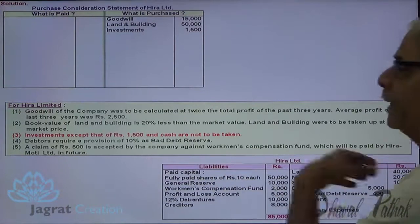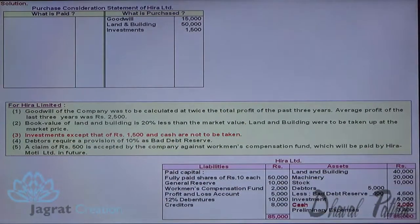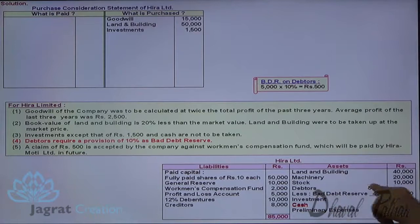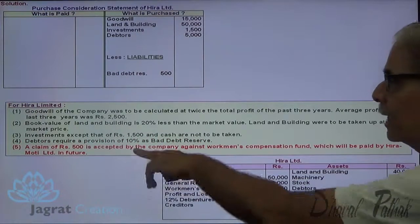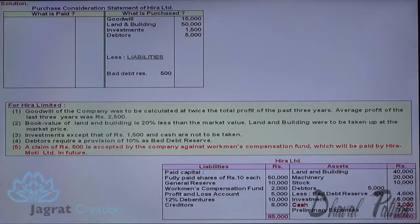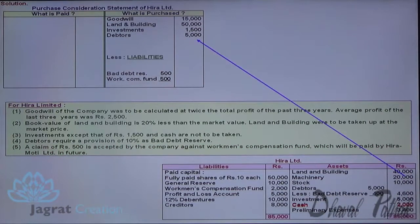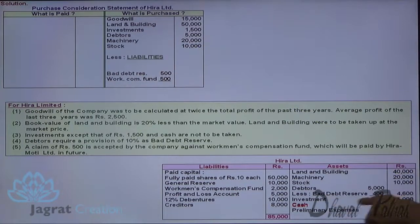Debtors require 10% provision for bad debt. Debtors are 5,000, so 10% provision is 500, meaning net debtors are 4,500. A claim of 500 is accepted against the workman compensation fund — this is a liability assumed by the new company to be paid in future, so it is recorded as a liability of 500. Other assets: machinery at 20,000, stock at 10,000. Creditors are also purchased. For debentures there is an important statement in the sum.